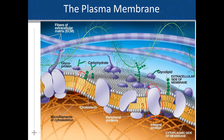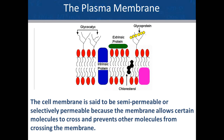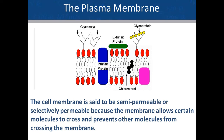Looking at this, you should be able to determine that this is indeed an animal cell. The reason it's an animal cell is because it has an extracellular matrix, and there's also cholesterol inserted into the membrane. The cell membrane is said to be semi-permeable or selectively permeable because it allows certain molecules to cross and prevents others from entering or exiting the cell. If a protein is just on the outside, we call that an extrinsic or peripheral protein. If it goes into or all the way through the membrane, we call that an intrinsic protein.